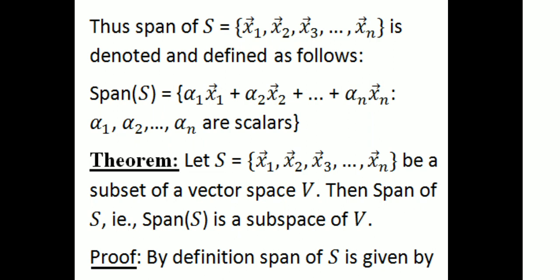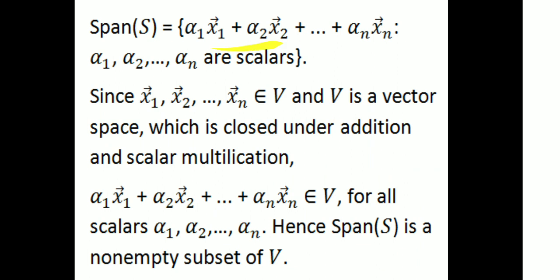Span(S) equals the set of all vectors, where x₁, x₂, ..., xₙ is a subset of a vector space V. Then span(S) is a subspace of V. By the definition of span, span(S) = α₁x₁ + α₂x₂ + ... + αₙxₙ, where α₁, α₂, ..., αₙ are scalars, and vectors x₁, x₂, ..., xₙ belong to vector space V.